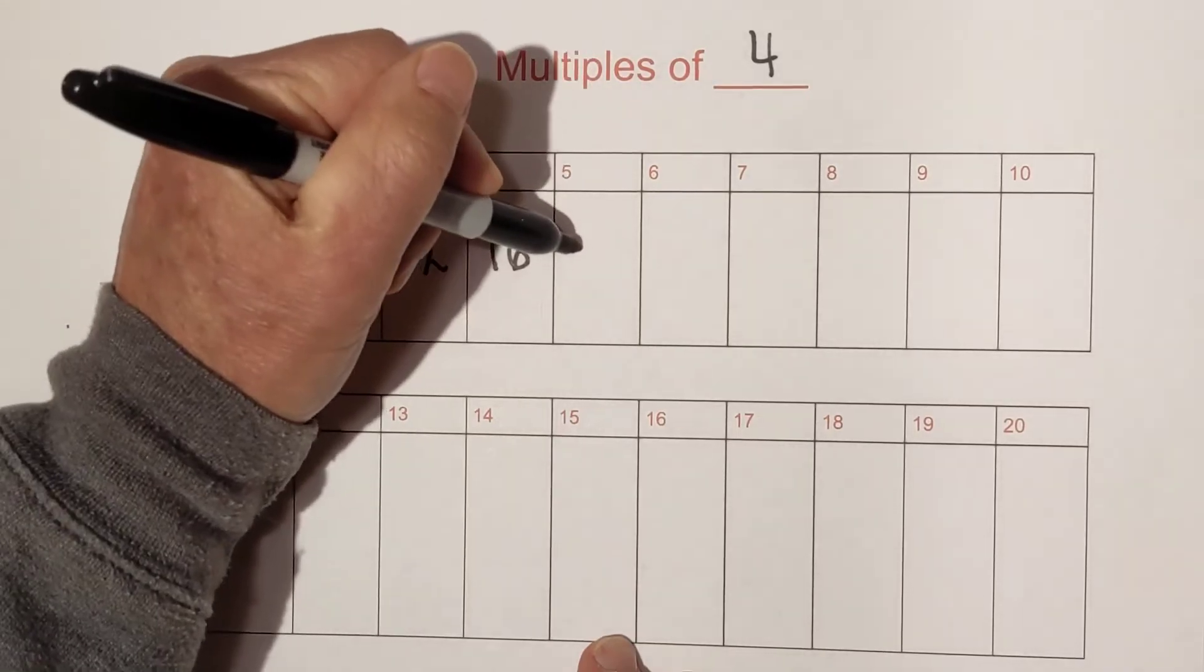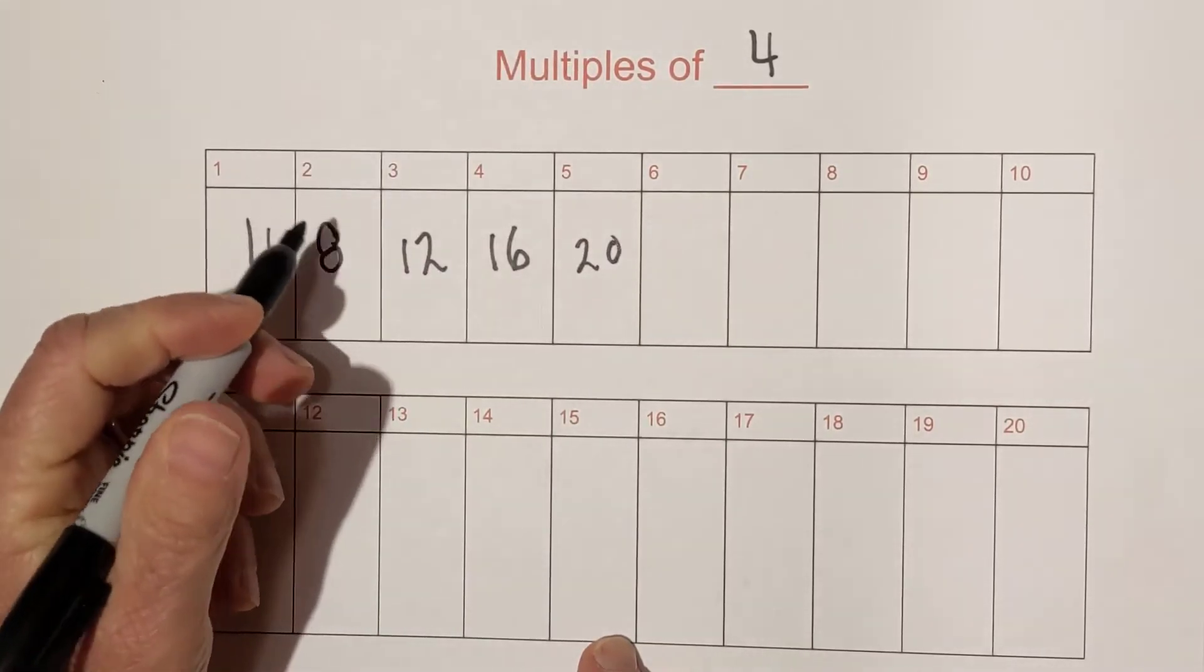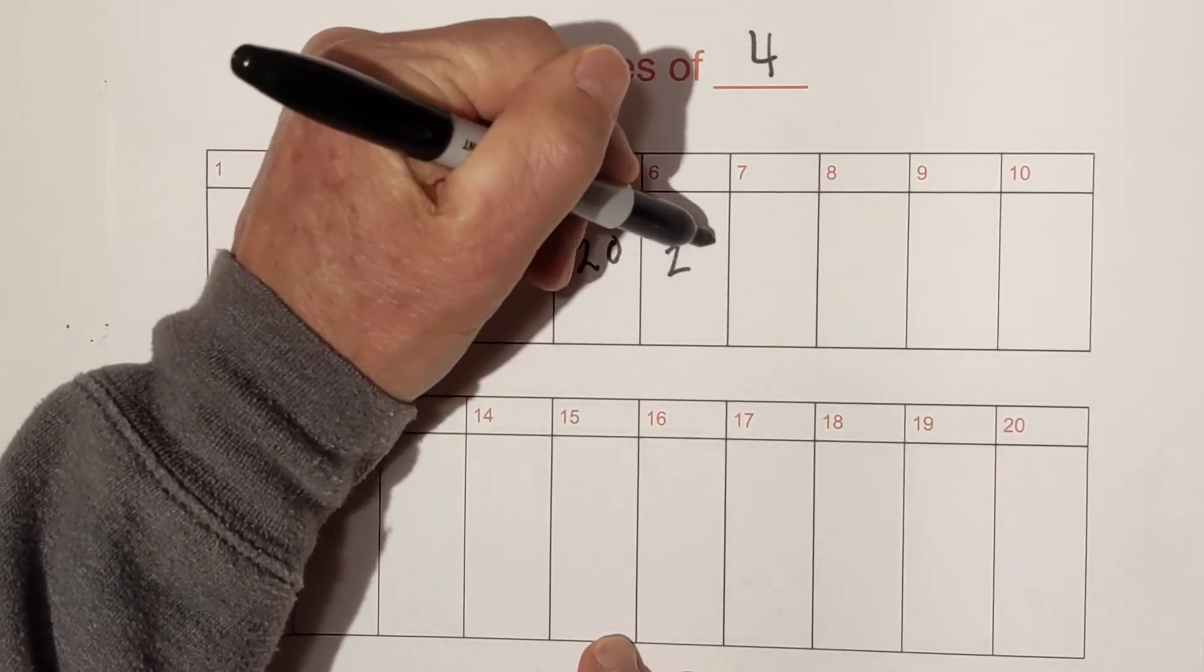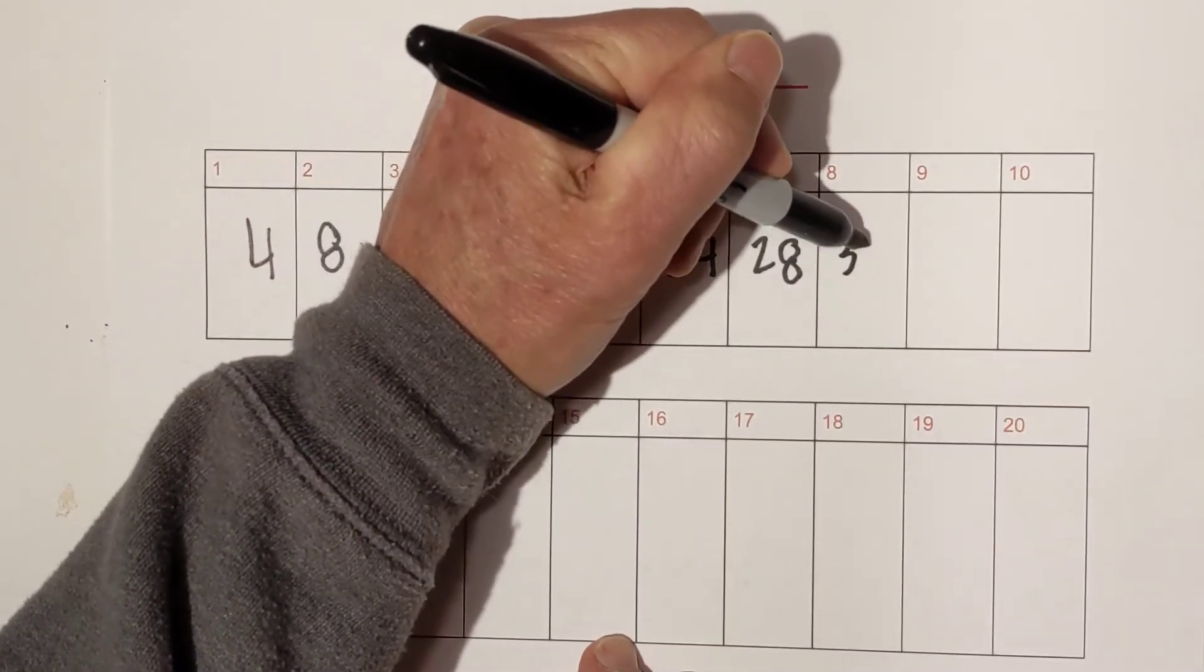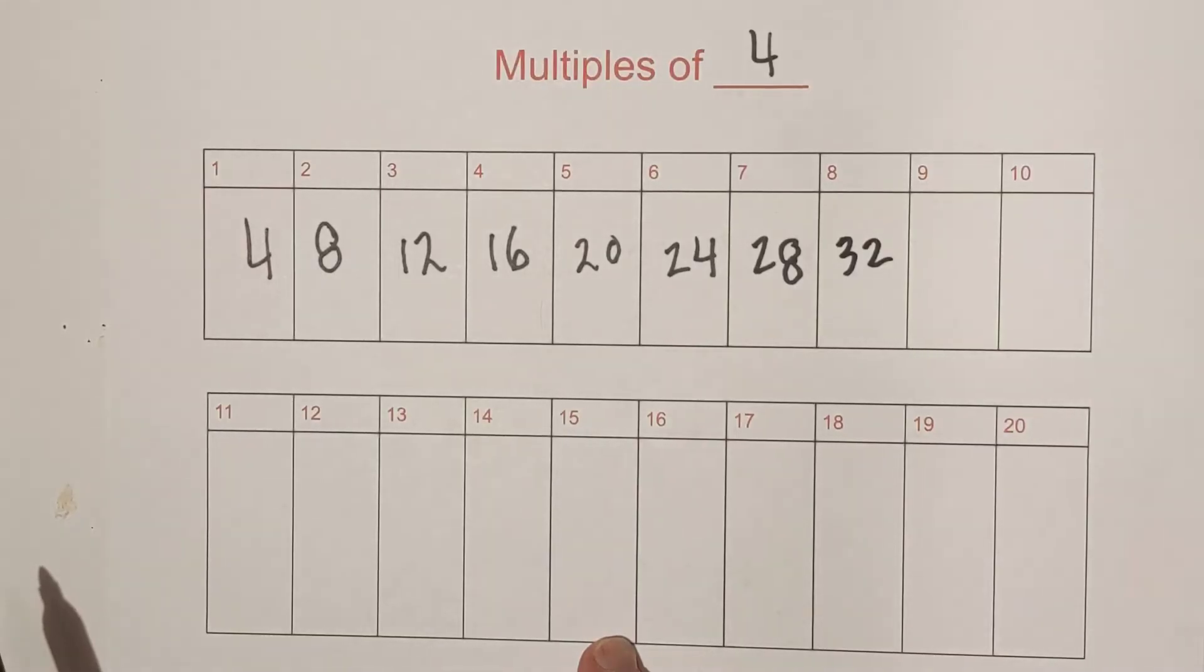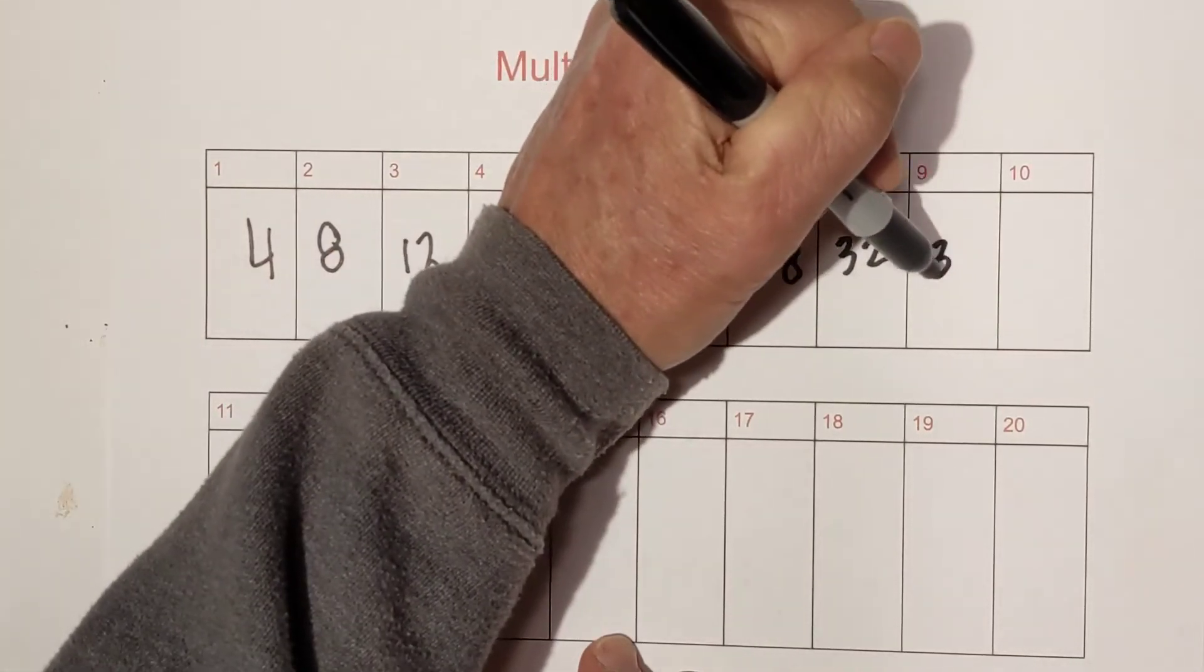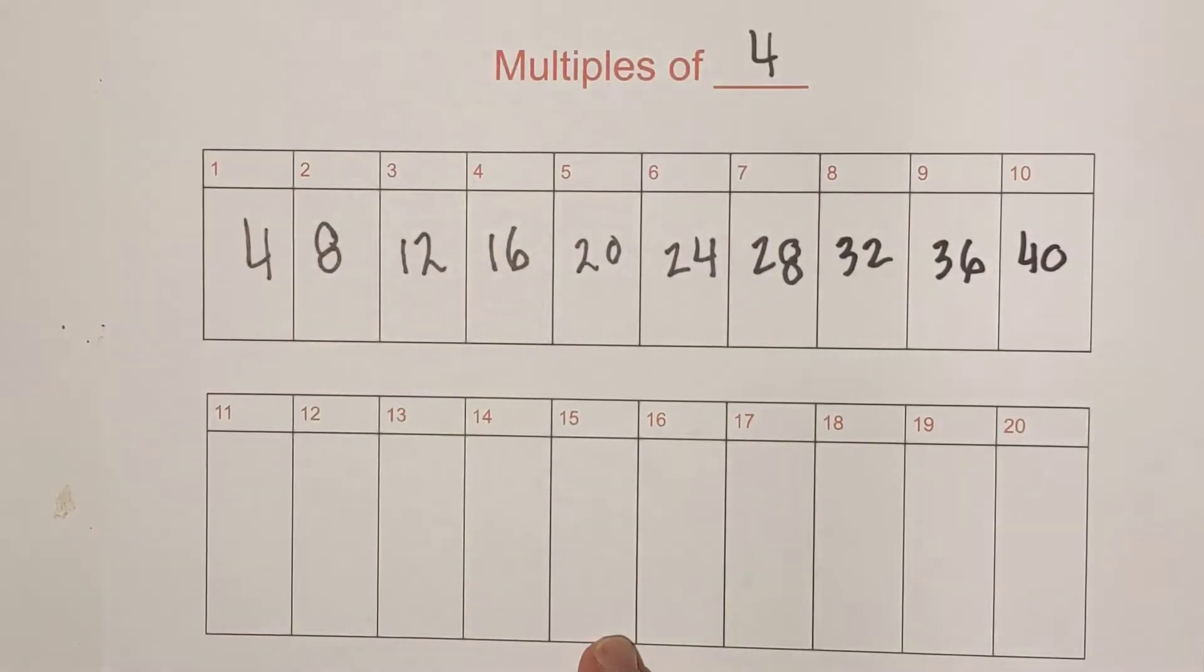Four times four is sixteen. Then we have twenty, six times four is twenty-four. Then we have twenty-eight. Then we have eight times four is thirty-two, thirty-six, and forty.